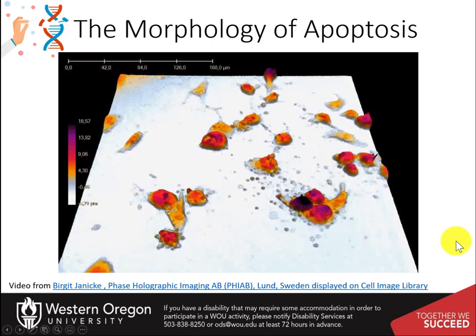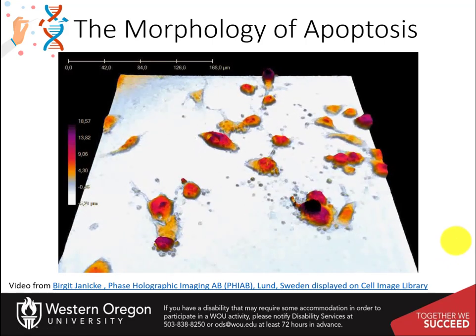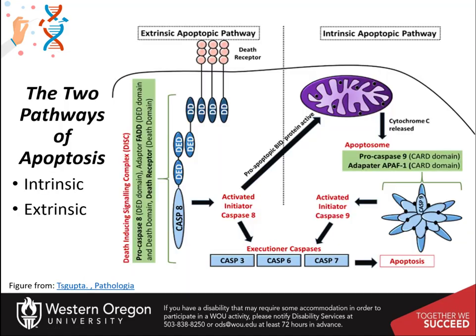In this video, there are no phagocytes in the culture to come and remove the apoptotic cells. There are two major apoptotic signaling pathways: the extrinsic pathway and the mitochondrial intrinsic pathway. In the next few slides, we will look more closely at the mechanisms of each of these pathways that lead to cell suicide. Note that both pathways end up activating a series of proteins called caspases.